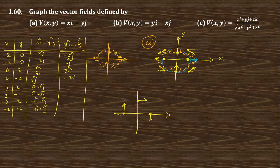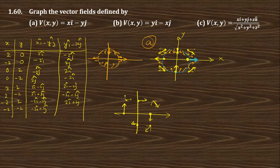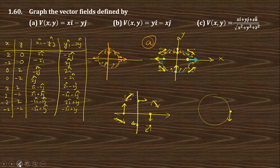For (2, 2): this gives 2i cap minus 2j cap — resultant along that direction. For (2, -2): that is minus 2i cap minus 2j cap — at that point resultant along that direction. For (-2, 2): that is 2i cap plus 2j cap — i is plus, j is plus, resultant along that direction. For (-2, -2): minus 2i cap plus 2j cap — at that point i is minus, j is plus, so resultant in that direction.